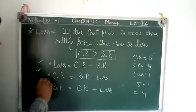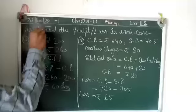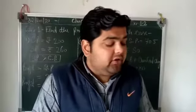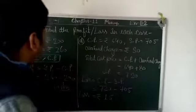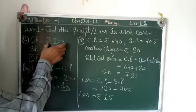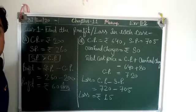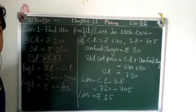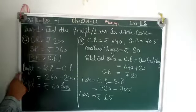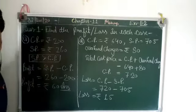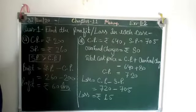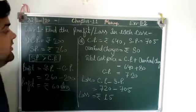We can now apply these points in Exercise 11.2. Question number 1 says: find the profit or loss in each case. Part A: CP is 200 rupees and SP is 260 rupees. Since SP is bigger than CP, we get profit. Profit = SP minus CP = 260 minus 200 = 60 rupees profit.